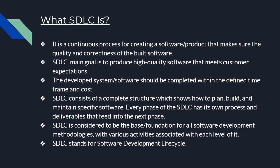So what is a Software Development Life Cycle? SDLC is a continuous process of creating a software or product that ensures the quality and correctness of the built software. The main goal of SDLC is to produce high-quality software that meets customer expectations and requirements. The developed software should be completed within a defined time frame and with a predefined cost. SDLC consists of a complete structure showing how to plan, build, and maintain a software application, and every phase has its own process and deliverables that feed into the next phase.